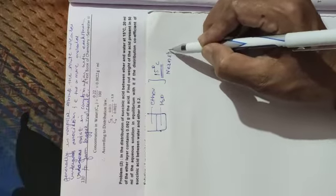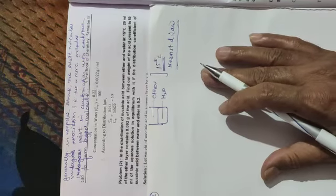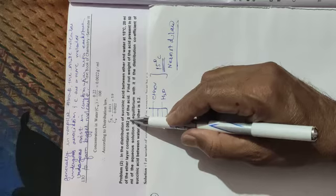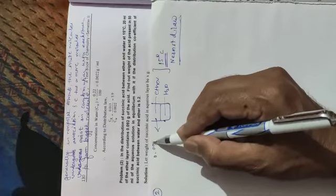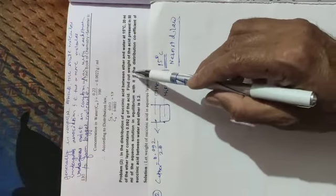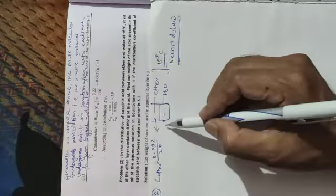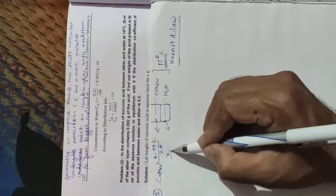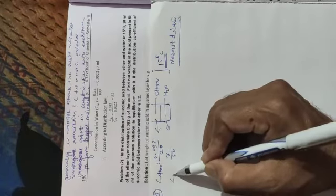Temperature should be constant for the validity of Nernst distribution law. The ether layer contains 0.092 grams of succinic acid in 20 ml of ether layer — that is the concentration in the ether layer. We need to find out the weight of succinic acid in 50 ml of the aqueous layer.